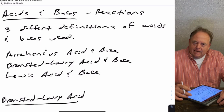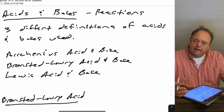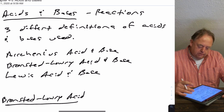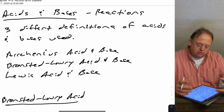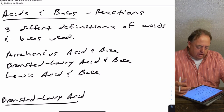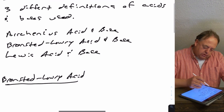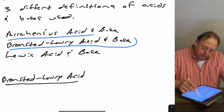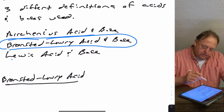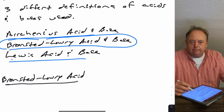This lecture covers acids and bases and looks at some example reactions. In this chapter, some terminology to know: there are three different definitions of acids and bases. There's the Arrhenius definition, the Bronsted-Lowry definition — which is the one we're going to focus on in this chapter — and there's the Lewis acid and base definition.